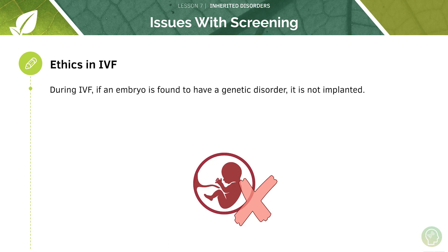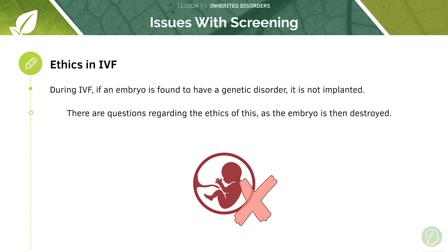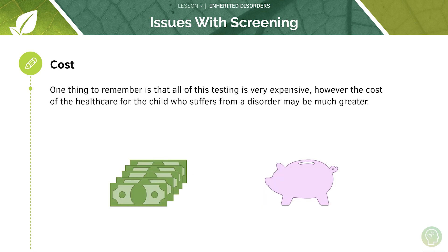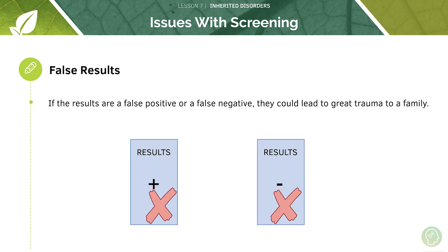In IVF, if an embryo is found to have a genetic disorder it is not implanted, which is very controversial because that embryo would then be destroyed. All of this testing is also very expensive, though that must be balanced against the healthcare costs for a child born with a genetic disorder. Additionally, if results are a false positive or a false negative, that could lead to great trauma to a family due to issues with the specificity and accuracy of these screening results.